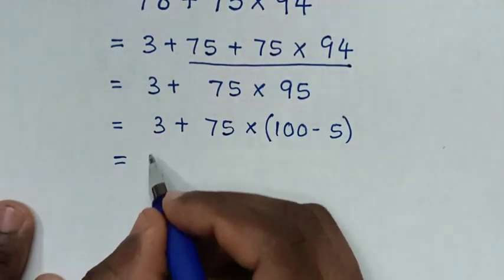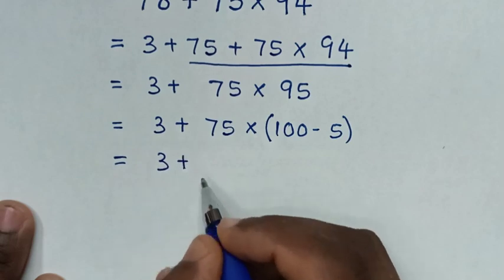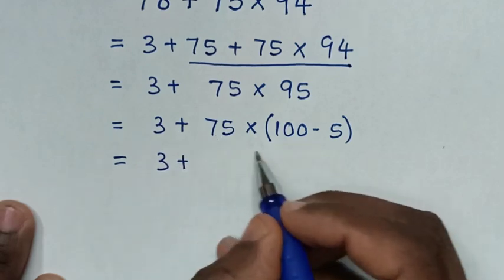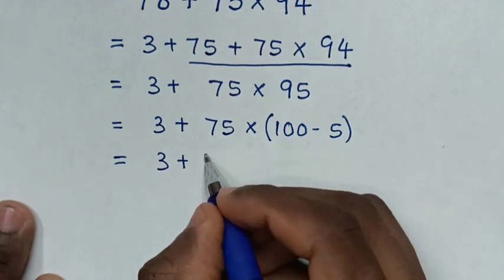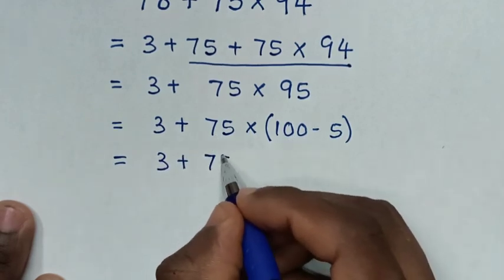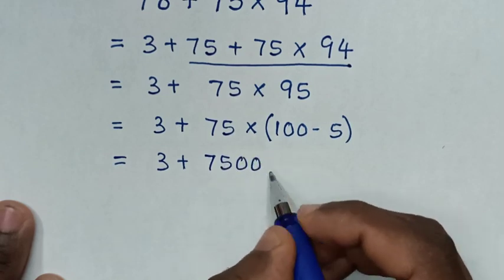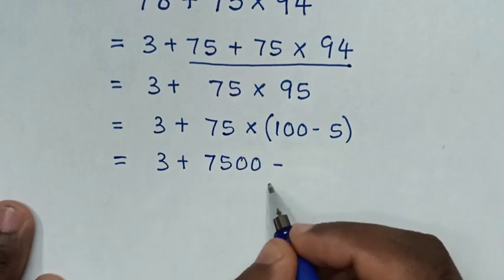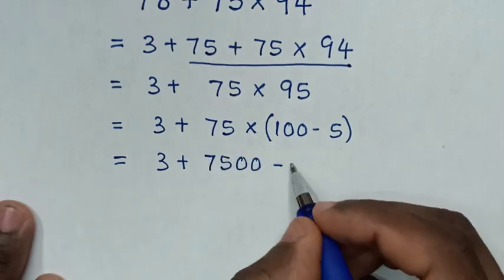Then it will be equal to 3, then plus 75 times 100, which is 7,500, then minus 75 times 5.